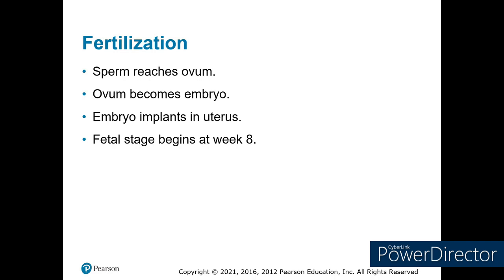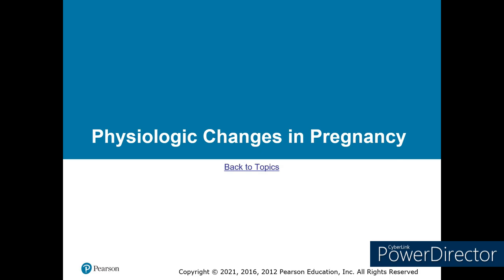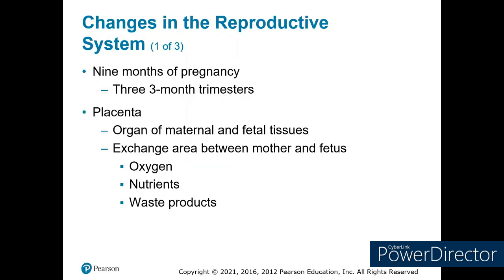As the fetus grows within the mother's uterus, certain physiological changes start to occur as the body adjusts to support fetal development. A typical pregnancy is 40 weeks, or nine months, and we divide that into three trimesters, which help us determine what symptoms the mother may experience.